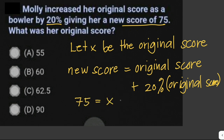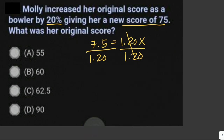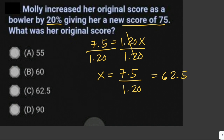Plugging in the values: 75 = X + 20% of X, so 75 = X + 0.20X, which gives 75 = 1.20X. Dividing both sides by 1.20 gives X = 62.5. Since you're not allowed to use a calculator, you can use long division. The answer is letter C.